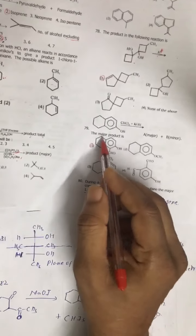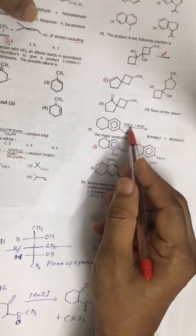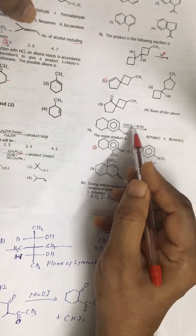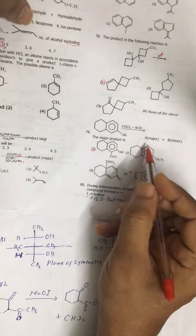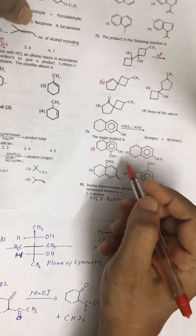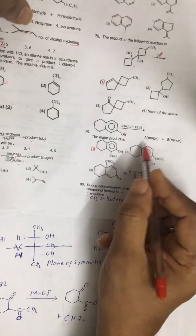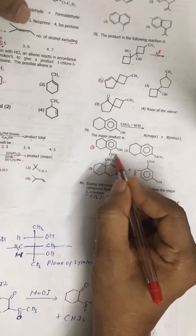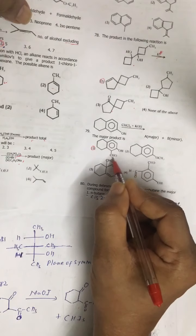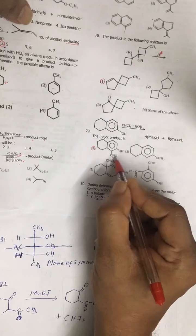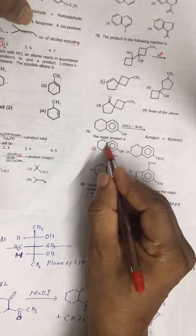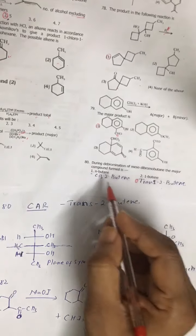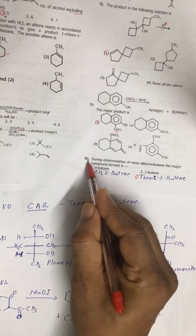Question number 79: it is chloroform and COH, so it is simply the Reimer-Tiemann reaction. The major product is CHO at the ortho position because the para position is already occupied.